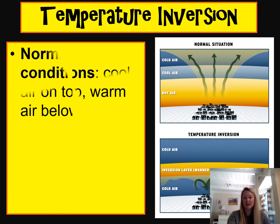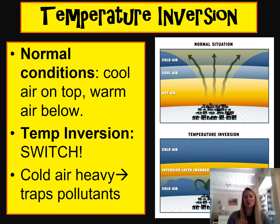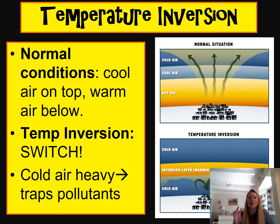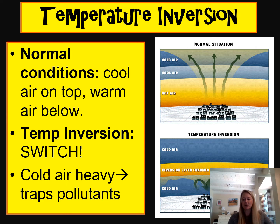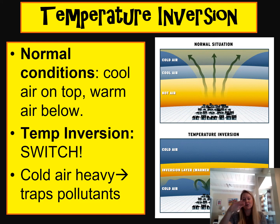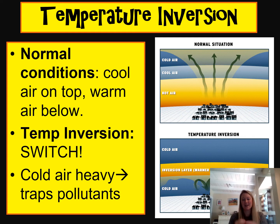Something that happens in the troposphere is called a temperature inversion, or thermal inversion. This is when the temperatures are flip-flopped: in normal conditions, cold air sits on top and warm air is below, because heat generated at the surface rises and cools. But in an inversion, cold air is on the bottom and warm air sits on top. Cold air is much more dense, so it traps pollutants down at the surface, making it pretty toxic to humans.